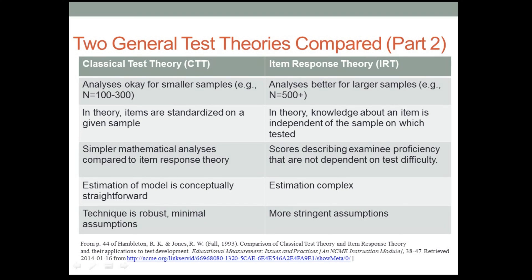In theory, knowledge about an item in item response theory is independent of the sample on which it's tested — so after an IRT analysis, you can apply an item to any sample in the world and know pretty much how it's going to perform. The scores describe examinee proficiency and are not dependent on test difficulty; the score is about the items. The estimation in IRT is complicated, using advanced computer software, sometimes beyond what you'd typically find in SPSS or Excel. And the assumptions are a bit more stringent.